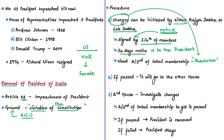A majority of two-thirds of the total membership of the House is required to pass the resolution. Once this resolution is passed in the first House, it is sent to the other House. The second House will investigate the charges made by the first House, and the president shall have the right to appear and be represented at such investigation. If a resolution is then passed by a majority of at least two-thirds of the total membership of the second House, the president shall stand removed from office from the date on which that resolution is passed.